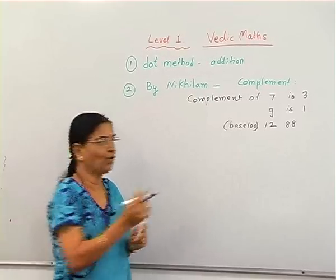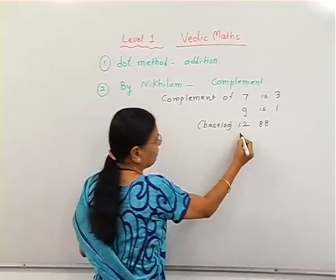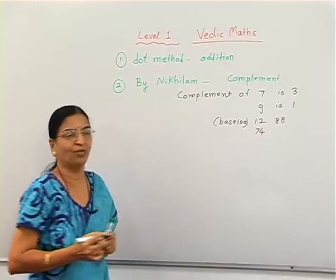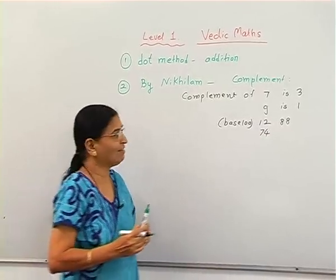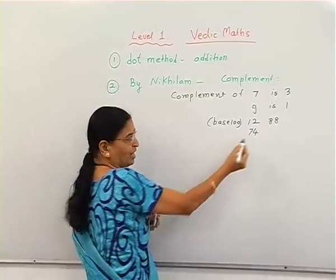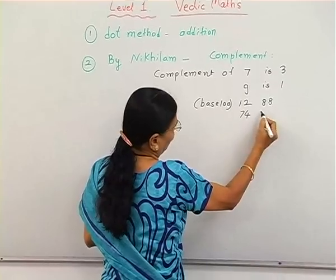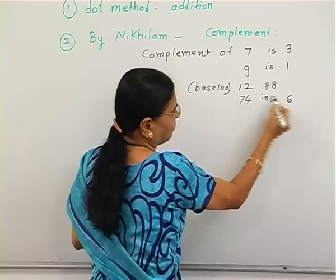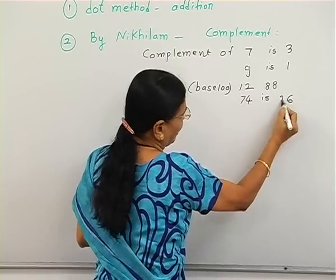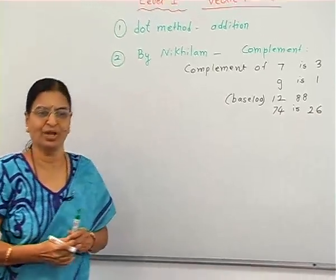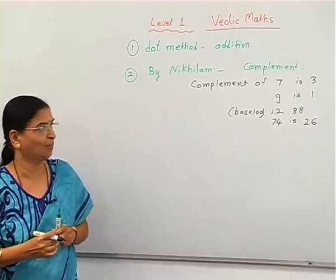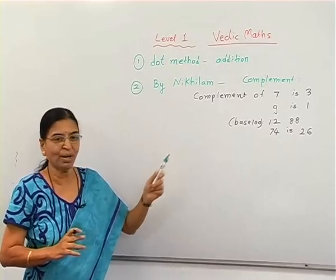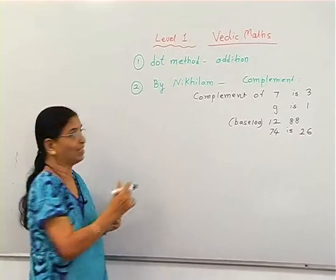Suppose we want to find the complement of 74 — the last digit from 10 is 6, and the first from 9 is 2, so the complement is 26. We can use this complement in multiplication.